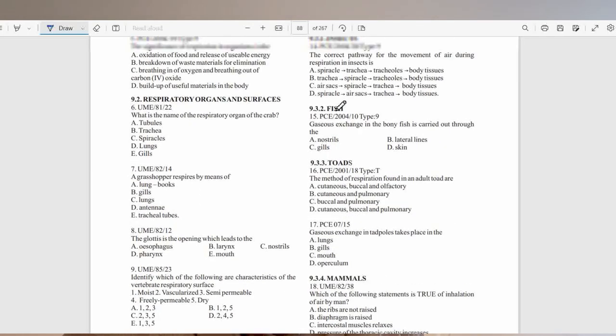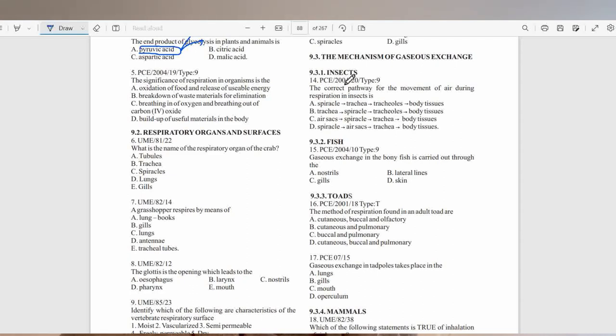Question number 14. In insects, the correct pathway for the movement of air during respiration is what? The spiracle is the external surface of the skin in insects. It opens into the trachea. The trachea divides into smaller vessels called the tracheoles. That takes the air into the body tissues. The answer will be between A and D. It is spiracle, trachea, tracheoles, and body tissue. The right answer is A.